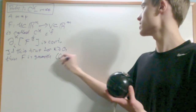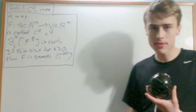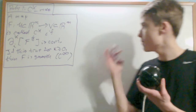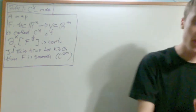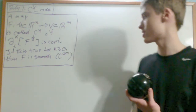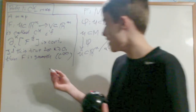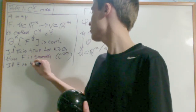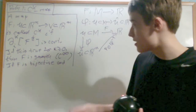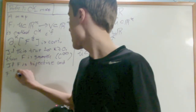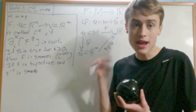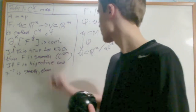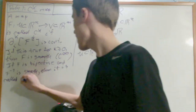Smooth is sometimes written C∞. Basically a smooth function is one that can be differentiated as many times as you want and will still be continuous. Also, if F is bijective and F inverse is smooth, then it is called a diffeomorphism.